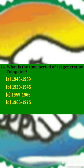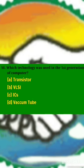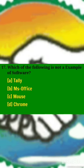What is the time period of a first generation computer? Answer A: 1946 to 1959. One byte equals? Answer C: 8 bits. Which technology was used in the first generation of computer? Answer D: vacuum tube.